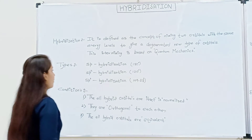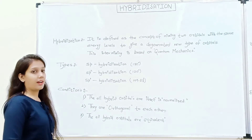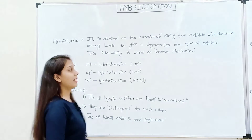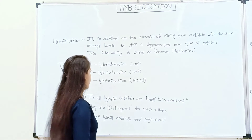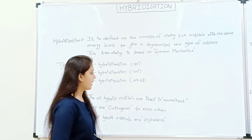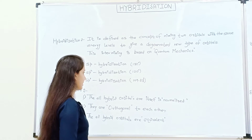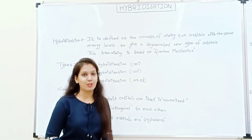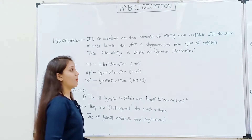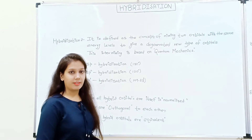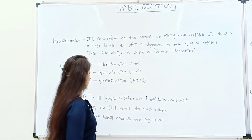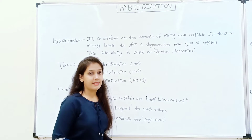The three types of hybridization are SP hybridization with an angle of 180 degrees, SP2 hybridization with an angle of 120 degrees, and SP3 hybridization with an angle of 109.28 degrees. This is all based on valence bond theory and we are here to further study it on the basis of quantum mechanics.